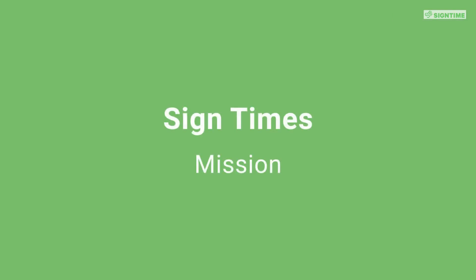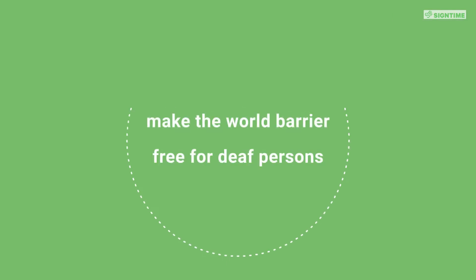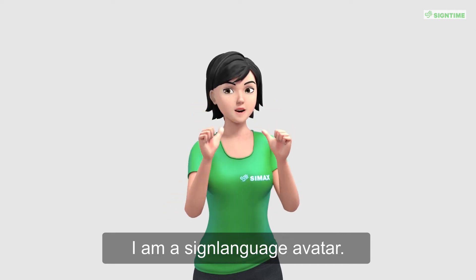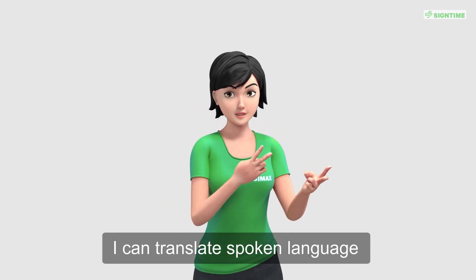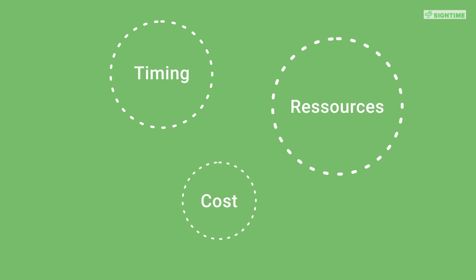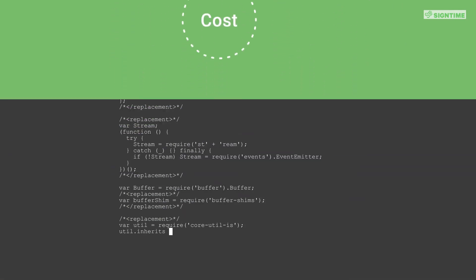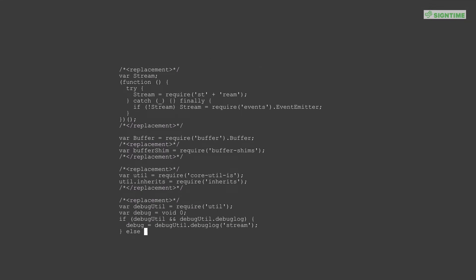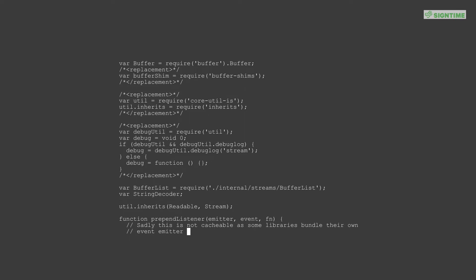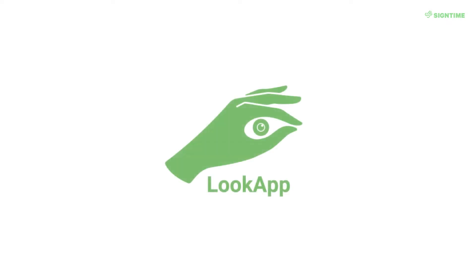As Sign Time's mission is to make the world barrier-free for deaf persons, we have found an affordable way to help them understand. Of course, the best way would be to translate into sign language, the mother tongue of deaf persons. But that is not feasible because of timing, resources and cost. Currently, there is no possibility for automation because we don't have enough training data for an AI translation system. Therefore, Sign Time has developed a bridging technology called LookApp, the reading aid.